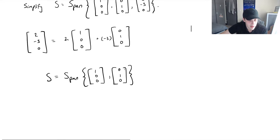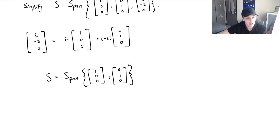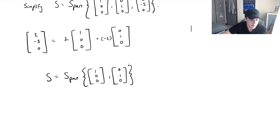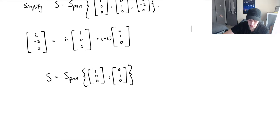Now we want to see if the two remaining vectors are linearly independent. We need to check: can one of them be written as a linear combination of the other? Since there are only two vectors, we're asking if (1, 0, 0) is a scalar multiple of (0, 1, 0). This is clearly not a scalar multiple of (0, 1, 0), so we can conclude these vectors are linearly independent since they are non-parallel and non-zero. This is our final answer for the first question.